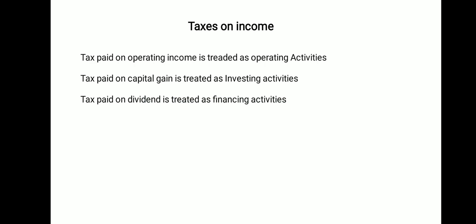For Non-Financial Institutions, Interest Paid and Dividend Paid are treated as financing activities. The next peculiar item is Taxes on Income. Tax paid on operating income is treated as operating activities. Tax paid on capital gain is treated as investing activities — capital gain arises when a company sells fixed assets for more than their original cost. Tax paid on dividend, such as Corporate Dividend Tax, is treated as financing activities.